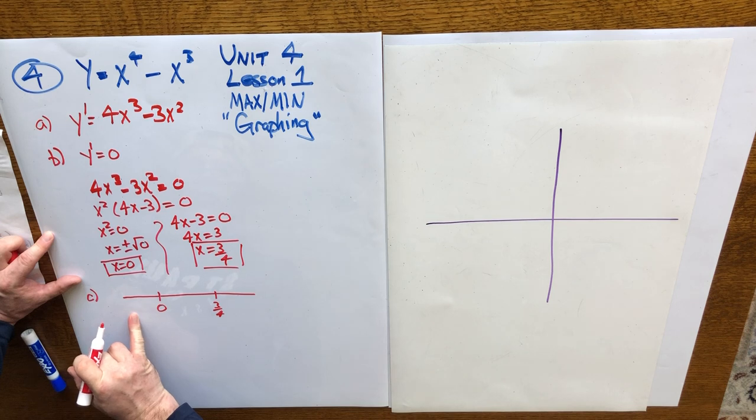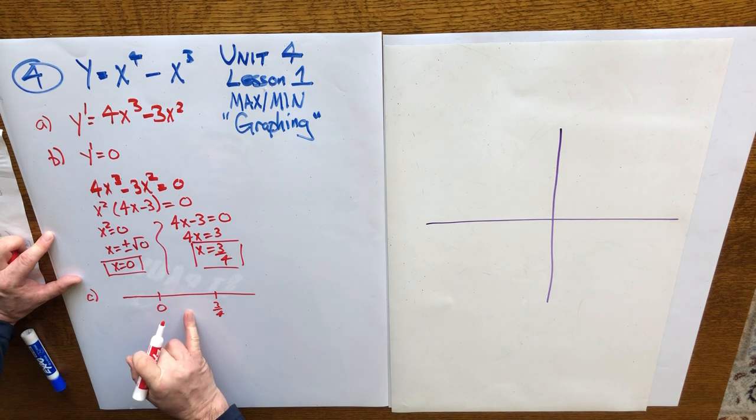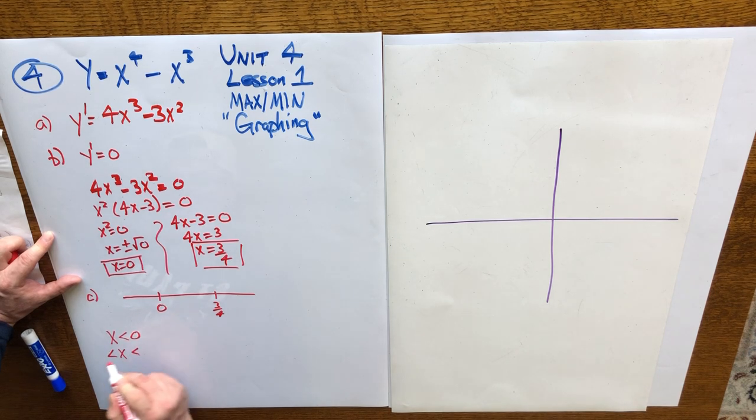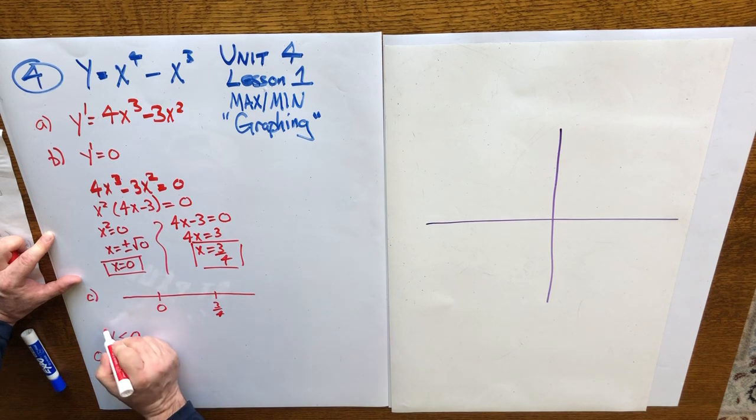Numbers less than 0, numbers between 0 and 3 quarters, numbers greater than 3 quarters. So x less than 0 is one interval, x in between 0 and 3 quarters is a second interval, x greater than 3 quarters is a third interval.